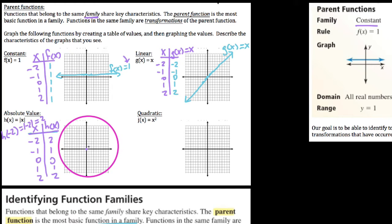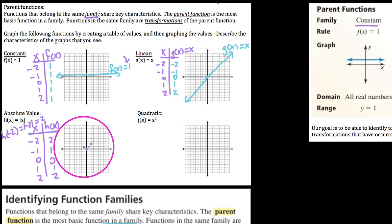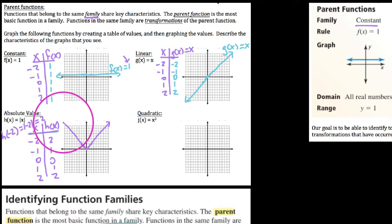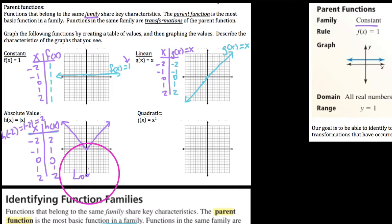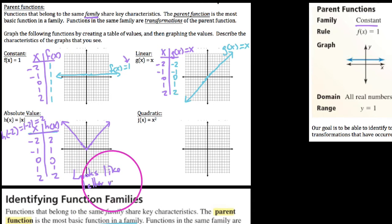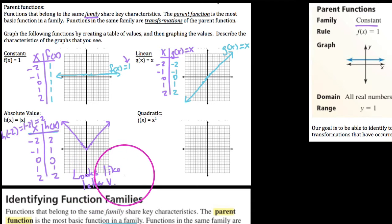If we graph zero-zero, one-one, two-two, then go back one and up one, and back two and up two, what we start to see — describing the characteristics of this graph — is a function that looks like the letter V. Any function in the absolute value family looks like the letter V, and it's very similar to a linear function.